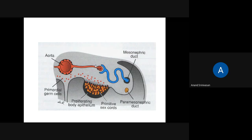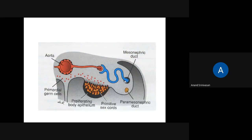Apart from the genital ridge, parallel to it there is a duct called the mesonephric duct and a paramesonephric duct. From the mesonephric duct, the initial part of the excretory system — the kidneys — develops. Just remember there is a mesonephric duct and paramesonephric duct which is adjacent to the genital ridge.